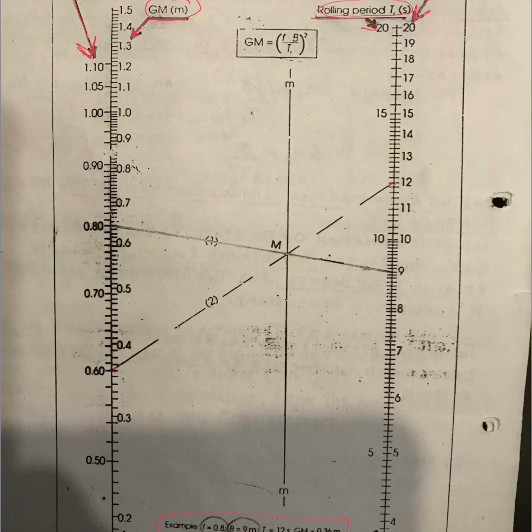If you see below, the example is given here. The rolling coefficient f is 0.8, breadth is 9 meters, and time period is 12 seconds. So instead of using the formula, you can also use this diagram.